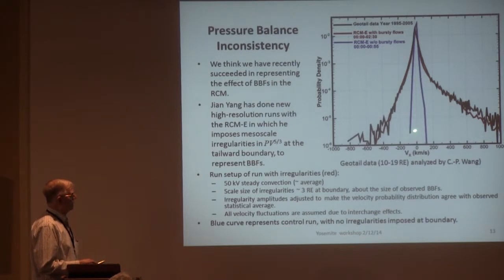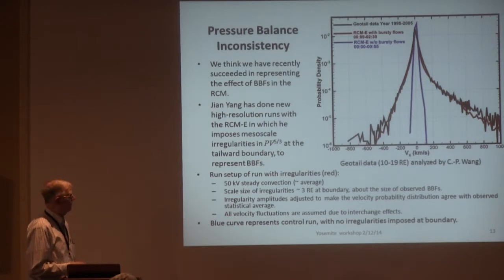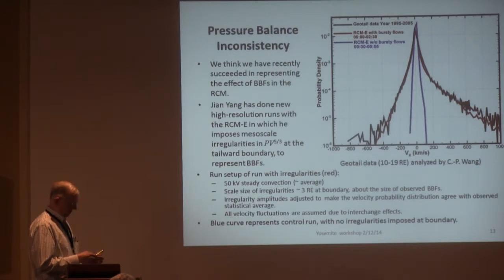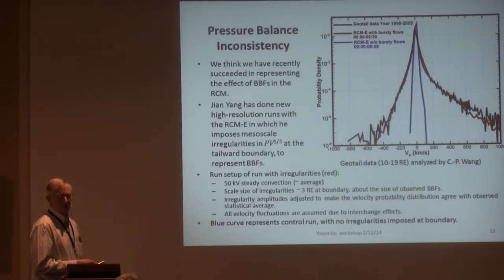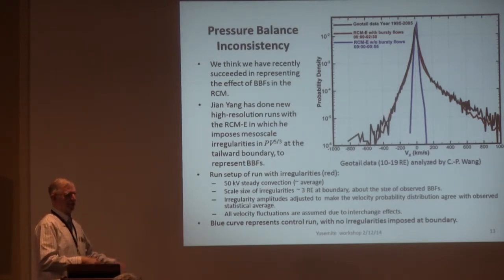If you just run the RCM with steady inputs corresponding to the average magnetosphere, then the fluctuations are not nearly as much as observed — you really get this wing with hundreds of kilometers per second, which are bursty bulk flows, and that's the thing we want to get. What Jin Yang did was to put in a spectrum of disturbances at the boundary so that the velocity distribution at 10 to 19 Earth radii in the RCME agreed with the long-term average for the plasma sheet. We're getting roughly the right amount of activity, assuming that all the velocity fluctuations are associated with interchange effects and the resulting bubbles, return flows, and churning.